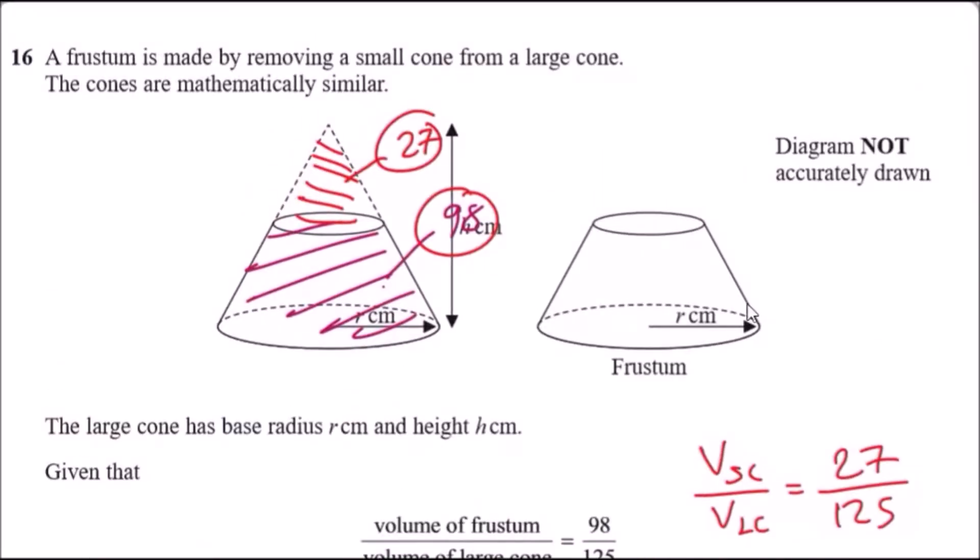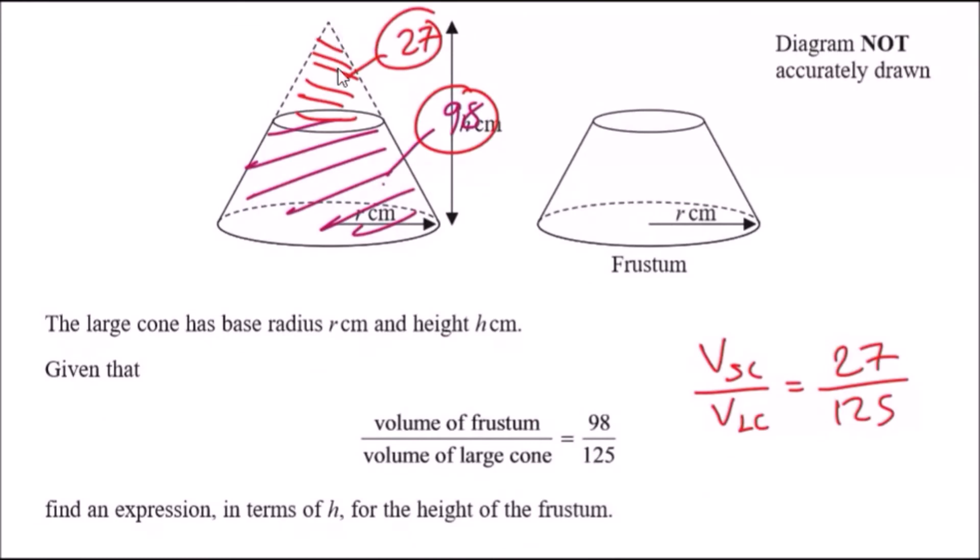If the small cone has a height of 3 parts, that means the full length has a height of 5 parts. If the whole thing is h, this means the height of the small cone is 3/5 of h.